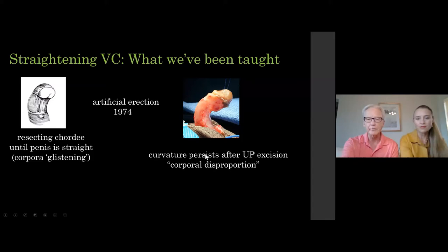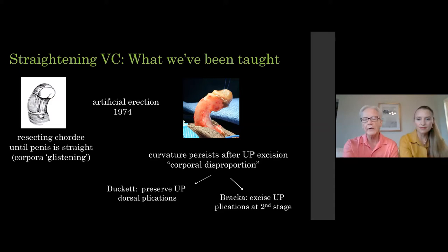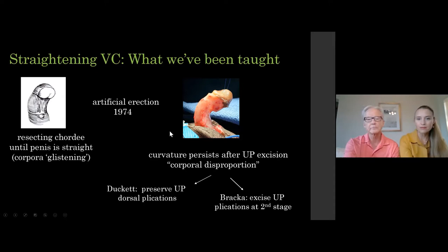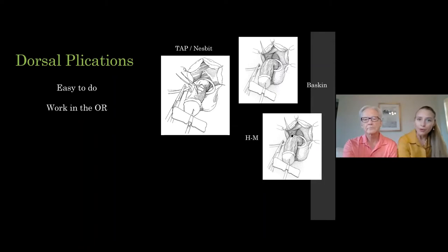Duckett asked: why cut away the urethral plate if it's still bent? Let's save it and straighten the penis with dorsal plication. Ivor Broca, the plastic surgeon, said you should cut away the urethral plate but still straighten any remaining curvature with dorsal plication. The answer to how you correct curvature after degloving is: do an artificial erection. In most proximal hypospadias patients you'll still see curvature, and dorsal plication is then performed because it's easy to do and appears to work in the operating room.